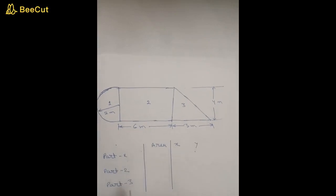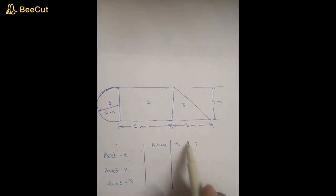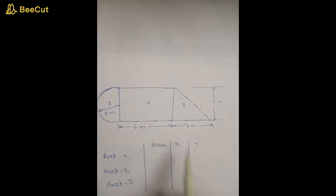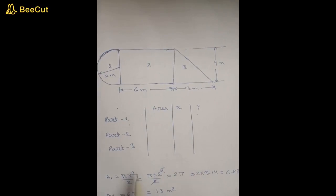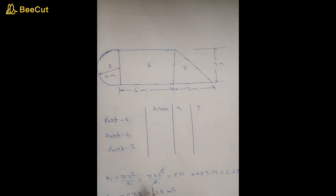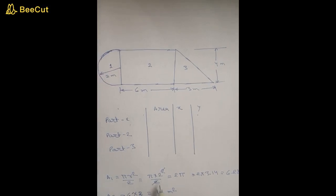We will draw a table for part 1, part 2, and part 3. We will write the area, then the x-coordinate of the centroid of each individual part, and then the y-coordinate of the centroid of each individual part.